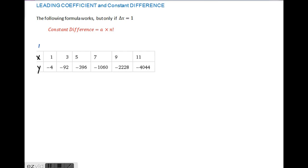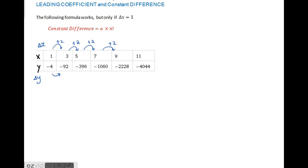I'll start off by noting that the change in x here is actually going up by 2. This method works as long as you are consistently going up by the same amount in x values. The first differences are: negative 88, negative 304, negative 664, negative 1168, and negative 1816. None of these numbers are the same, so this relationship is not linear.